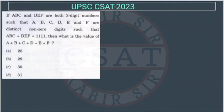Now let's do this question. If ABC and DEF are both three-digit numbers such that A, B, C, D, E, F are distinct, non-zero digits, and ABC plus DEF equals 1111...